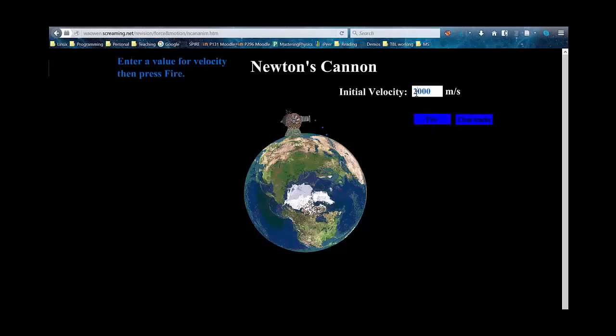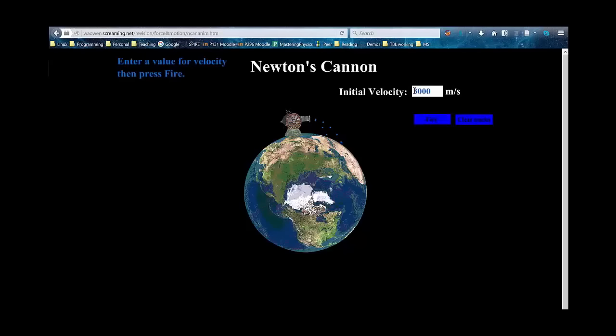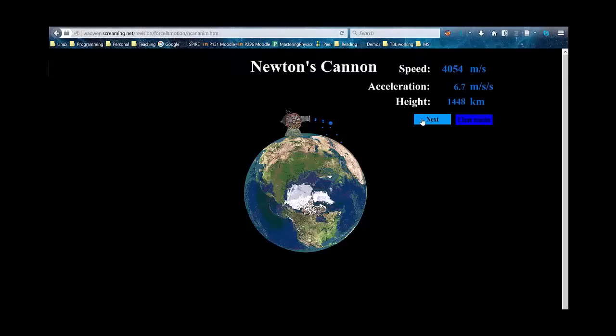If I fire it a little faster, say 3,000 meters per second, then the cannonball goes a little further before hitting the ground. Let's go a little faster, 4,000 meters per second. This is a very fast cannonball. So you fire the cannonball, and you can see it goes very far, and the fact that the Earth is curved is starting to become a factor.